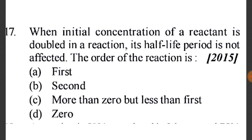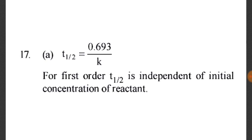Question 17: When the initial concentration of a reactant is doubled in a reaction, its half-life period is not affected. This indicates a first order reaction, because for first order: t½ = 0.693/k, which is independent of initial concentration.